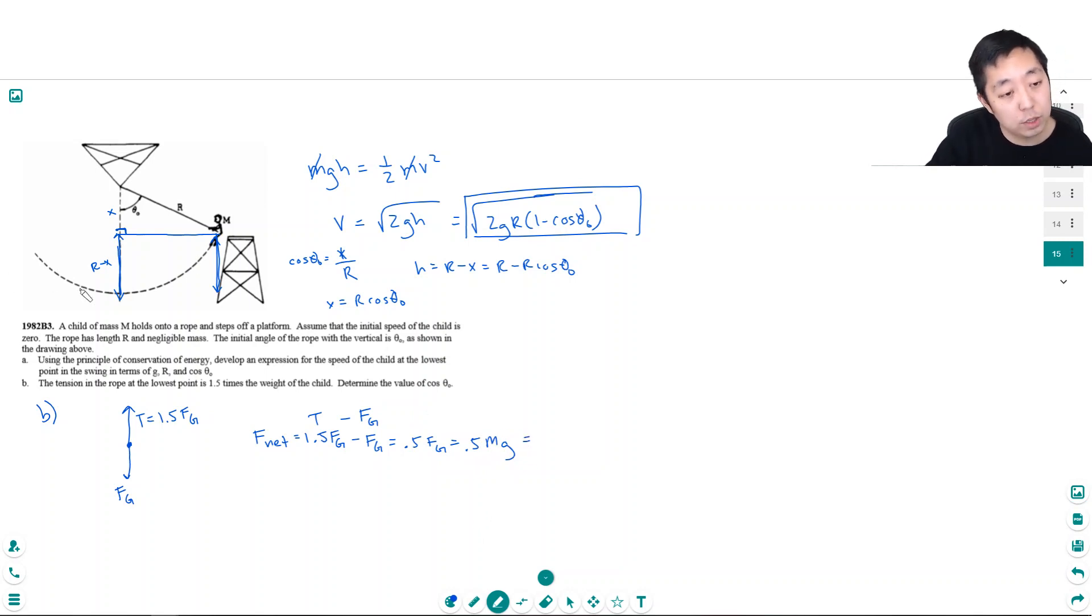But this is circular motion. So this is equal to M times A, because that's a net force. And the A is circular motion, which would be v squared over r.